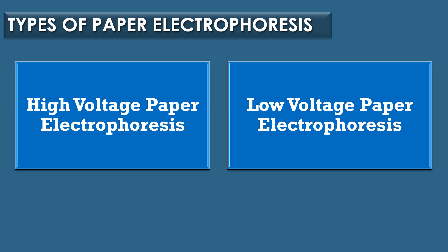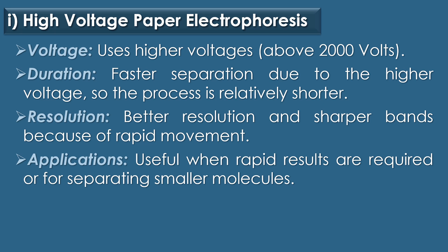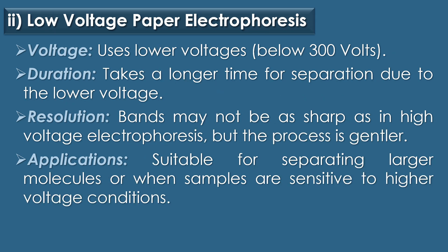Types of paper electrophoresis: paper electrophoresis can be classified based on the voltage applied during the process. There are two types: high voltage paper electrophoresis and low voltage paper electrophoresis. High voltage paper electrophoresis uses high voltages, typically above 2000 volts. The separation is faster and the process is relatively shorter. It offers better resolution and sharper bands due to rapid movement, and is especially useful when rapid results are required or for separating smaller molecules.